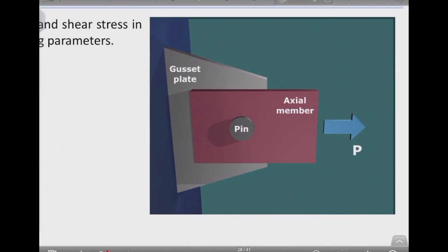Consider we have this connection, where one axially loaded element is connecting to, say, a column by a gusset plate. Here we used a pin to connect the axial member to the gusset plate.